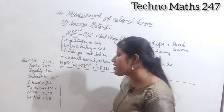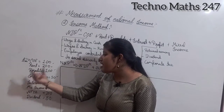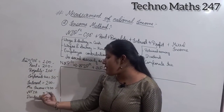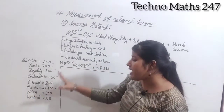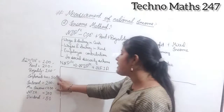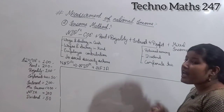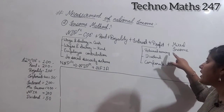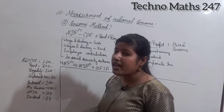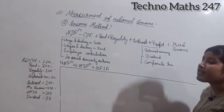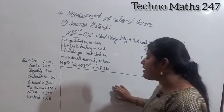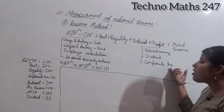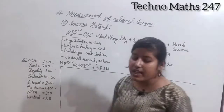Now our next question: COE = 100, Rent = 200, Royalty = 100, Interest = 200, Mixed Income = 400, NFIA = 200. Here, profit is not directly given. To find profit, we use its three components. Retained earning is not given, so we take it as 0. Dividend = 50 and Corporate Tax = 50 are given.